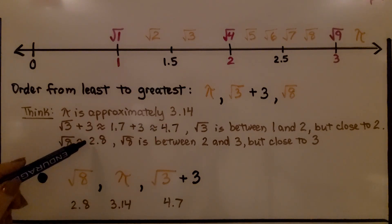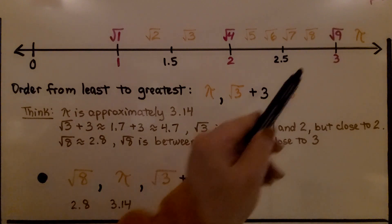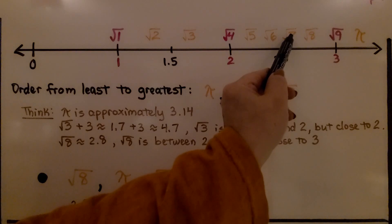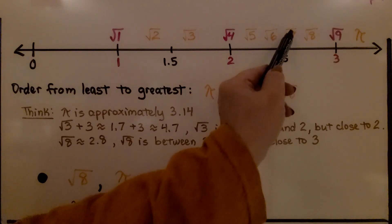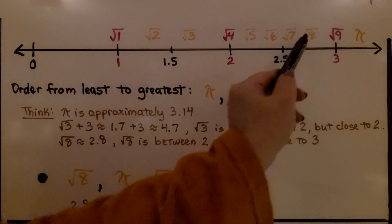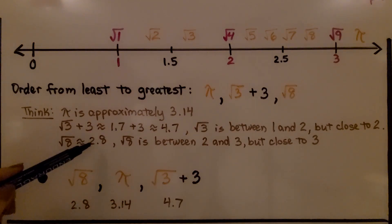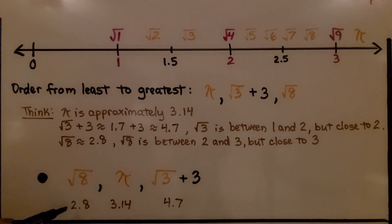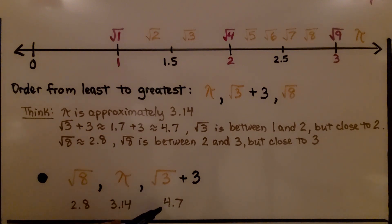The square root of 8 is approximately 2 and 8 tenths — it's greater than 2.5 but less than 3, and closer to 3. So to put them in order: the square root of 8 is about 2 and 8 tenths, pi is about 3 and 14 hundredths, and the square root of 3 plus 3 is about 4 and 7 tenths. Now they're in order from least to greatest.